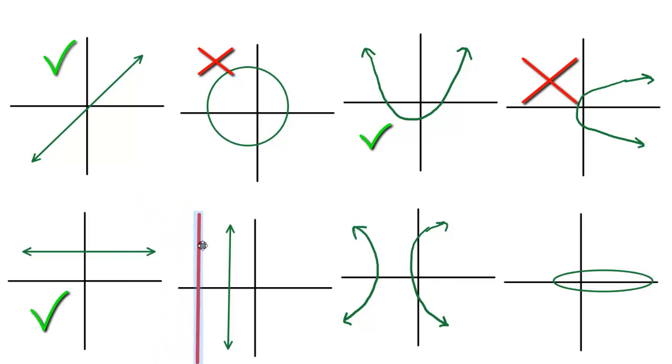The vertical line, though, if we place it over it, it continuously crosses over it. So that's definitely not going to be a function.